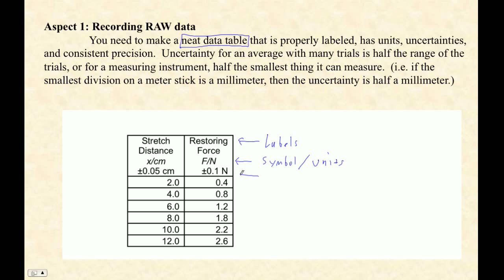Then they also want the uncertainty. And uncertainties are typically half the smallest thing you can measure. So if you could measure, as in this example, 0.2 is maybe the smallest thing you measure, then it's half of that. Or if a millimeter is the smallest thing, that's half a millimeter.